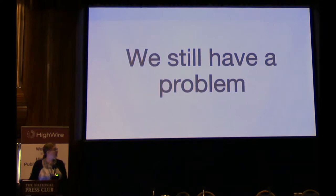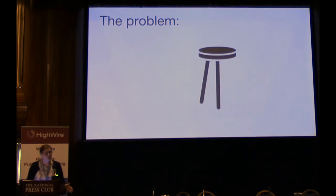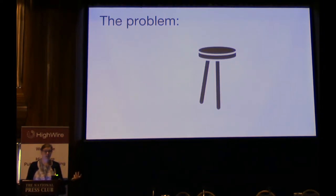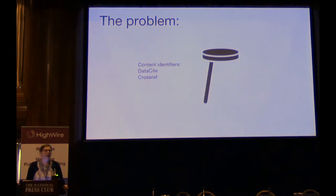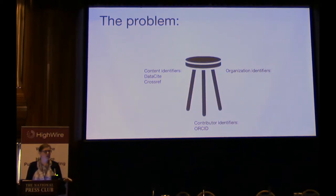Have all the problems been solved? No, we still have a big problem. These slides were originally created by Jeff Bilder, who is a very dynamic speaker, so I'm going to try to do them justice. The problem is that we have a two-legged stool — which is incomplete. If you think of one leg being content identifiers like DataCite and Crossref DOIs, and the second leg being contributor identifiers like ORCID, what would the third leg be? Organization identifiers. Those are the three pieces we need to identify research outputs and connect the people and organizations behind that.